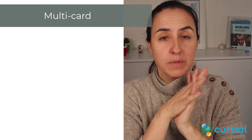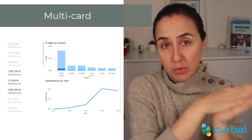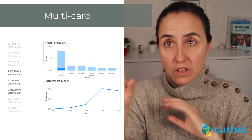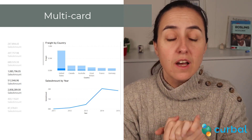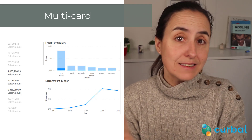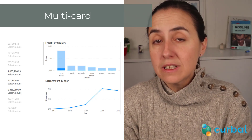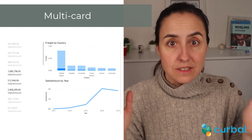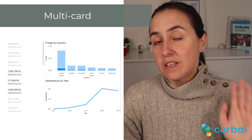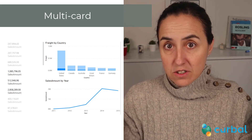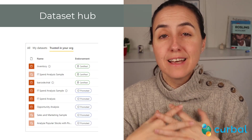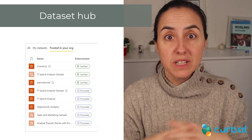Last month I reported that the multi-card visual was now able to cross-filter all visuals. Well, apparently it didn't actually ship — I didn't notice, but if you did, it's now back. In this March update it is now officially available.